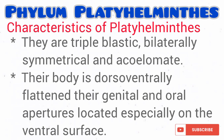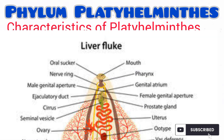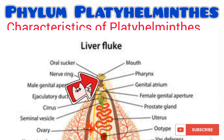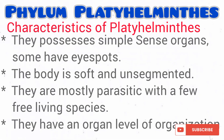They are actually acoelomate. In other words, they do not possess an internal body cavity or space other than the digestive tube. The digestive system is incomplete, which means that they possess only one opening to the external environment. This opening is regarded as the mouth, which is used for both ingestion and egestion, as you can see from the diagram on the screen.